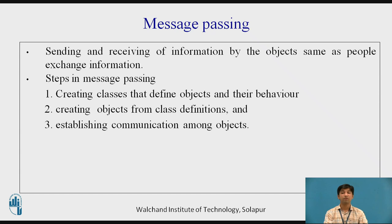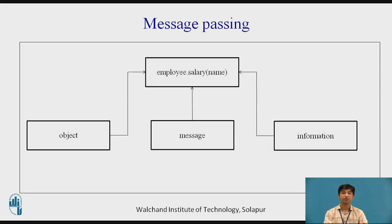A message for an object is a request for execution of a procedure and therefore will invoke a function in the receiving object that generates the desired result. Message passing involves specifying the name of the object, the name of the function, and the information to be sent. For example, an object called 'employee' with a function called 'salary' and data member 'name' — calling employee.salary(name) will display the result. Objects have a life cycle; they can be created and destroyed, and communication is possible as long as the object is alive.